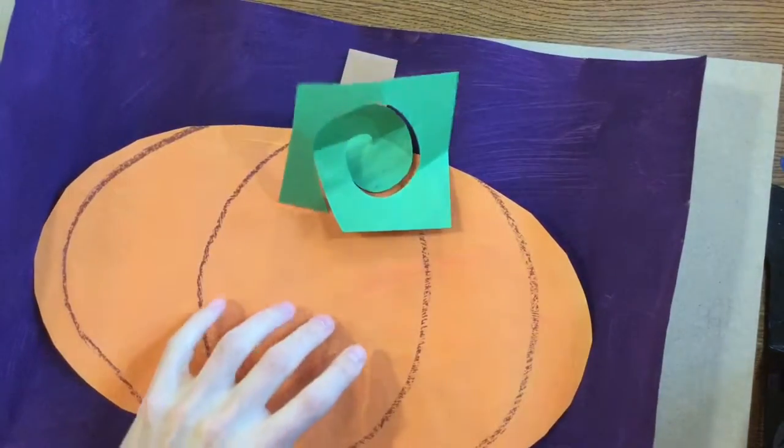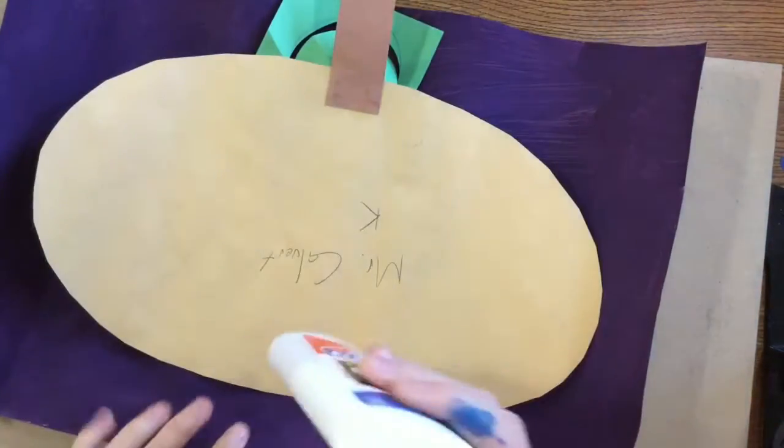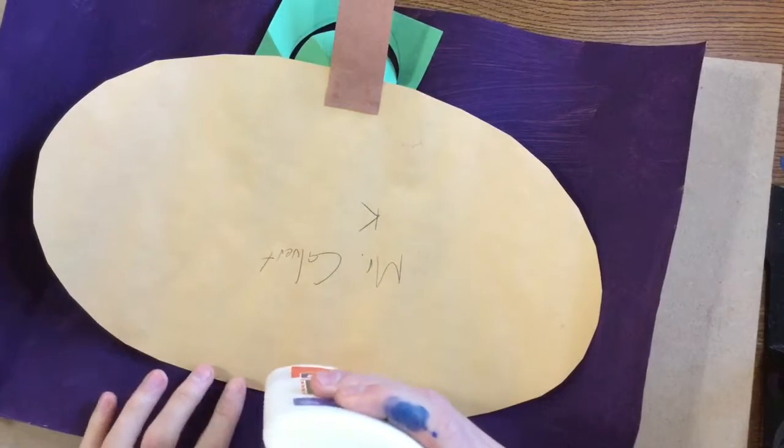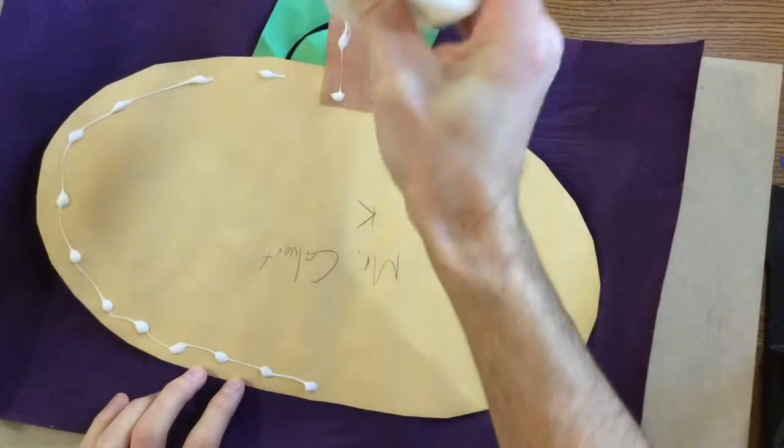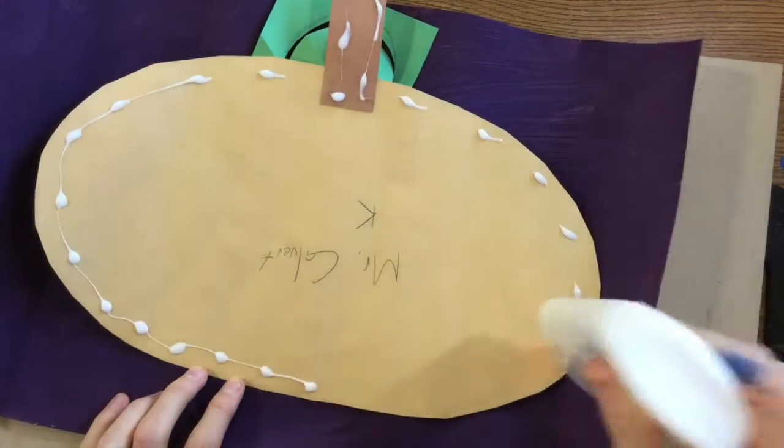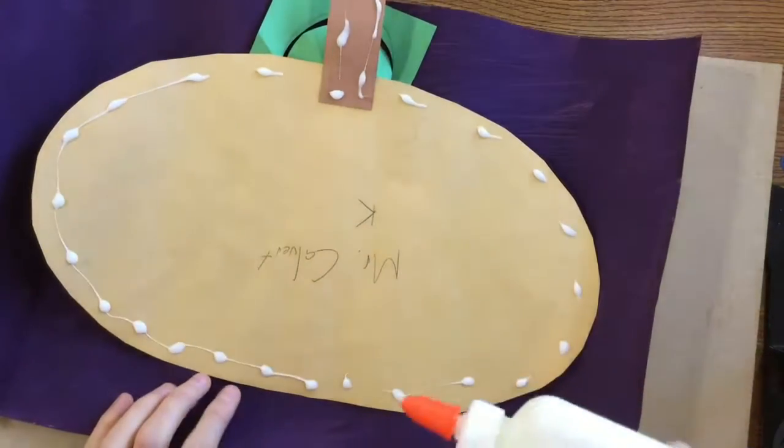So you're going to take that 2D pumpkin. You're going to flip it over. You're going to put dots of glue all over the back of it. And we're going to glue that to your purple background. The last time we made purple by mixing red and blue together.